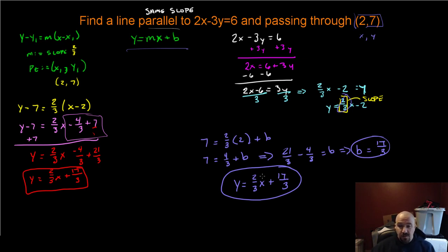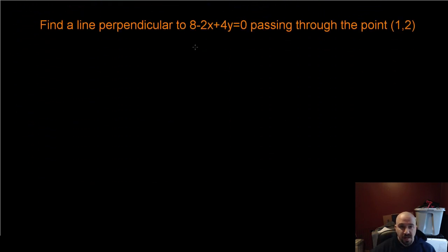I've got a couple more of these to do, and they're going to get progressively more difficult, although the difficulty is going to lie in where do you extract the information from. Find a line perpendicular to 8 - 2x + 4y = 0 passing through the point (1, 2). Recall that perpendicular lines are opposite reciprocal slopes.